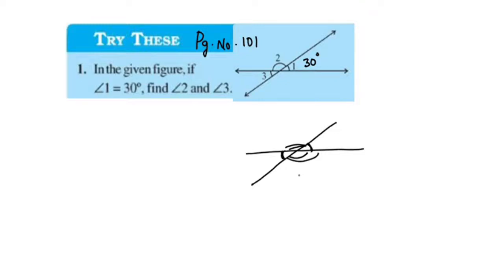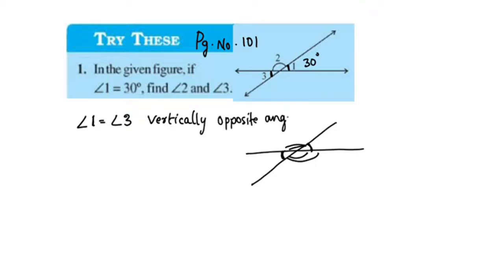Vertically opposite angles are equal. The angle of angle 1 and angle 3 — angle 1 is equal to angle 3. Vertically opposite angles are equal.